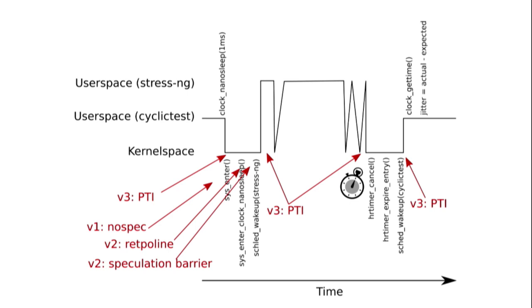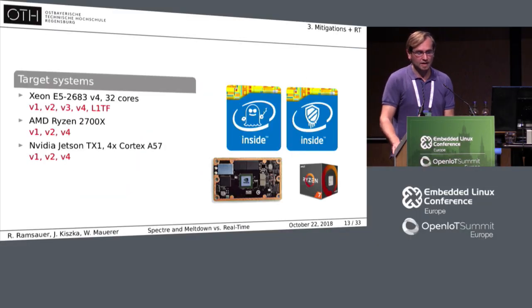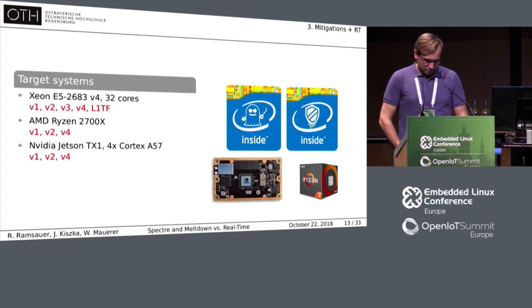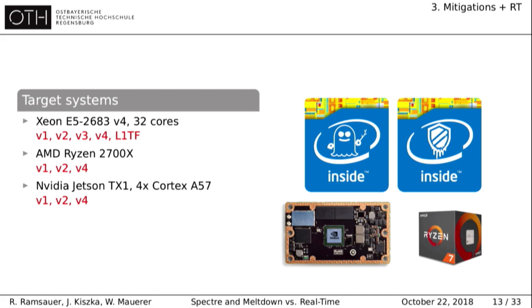Our target systems are an Intel x86-64 server system with a Xeon E5 fourth-generation processor, an AMD x86 system with a Ryzen 2700X, and for ARM64 we did those measurements on an NVIDIA Jetson TX1, which is equipped with four Cortex-A57 cores.